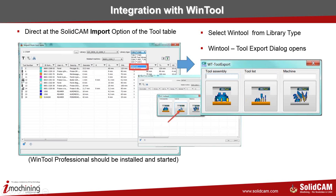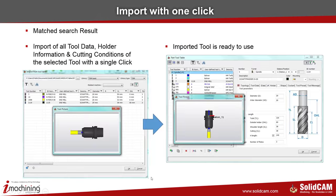We can get complete tool lists for a project, or — if prepared — tools which are used in a specific machine. The result we finally get from Wintool looks the same as in TDM. We read the information to the tool table, and with one click we get it into SolidCAM.